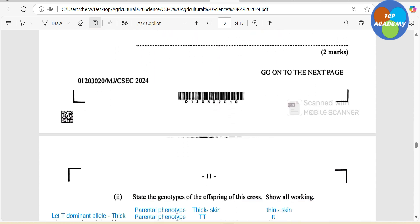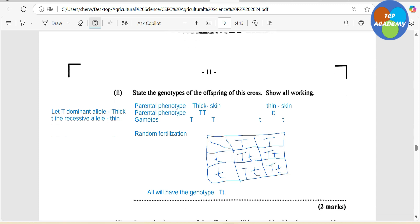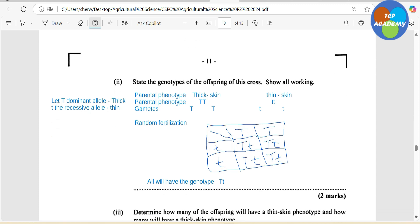Now we are expected to cross. It says, state the genotype of the offspring of this cross. Show all working. Interestingly, CXC, if this were biology or HSB, it would have been between 4 to 6 marks. But for agriculture, it is 2 marks. Can somebody explain to me in the comments why it is 2 marks for agriculture? Or if it would have been 4 or 6 marks for biology or human and social biology? One might say, the alleles were already defined. Of course, the alleles were defined. Let T be the dominant allele for thick, and small t be the recessive allele for thin. So that was noted above.